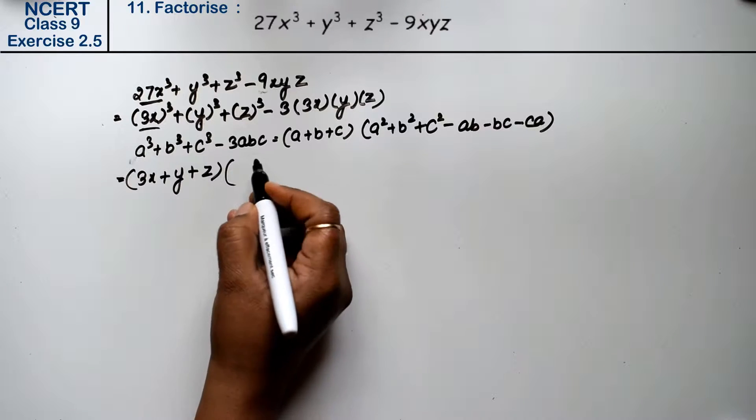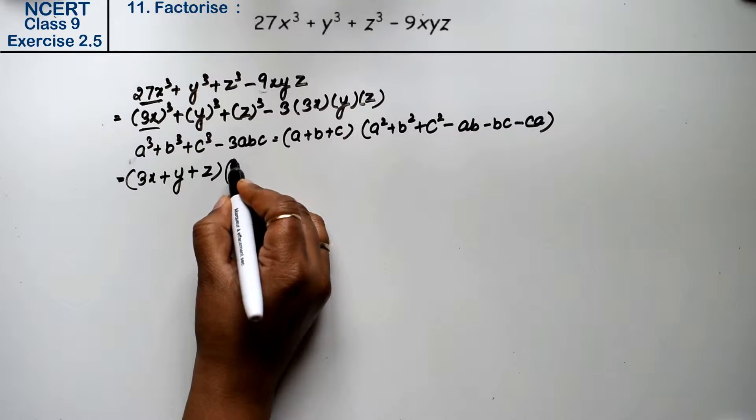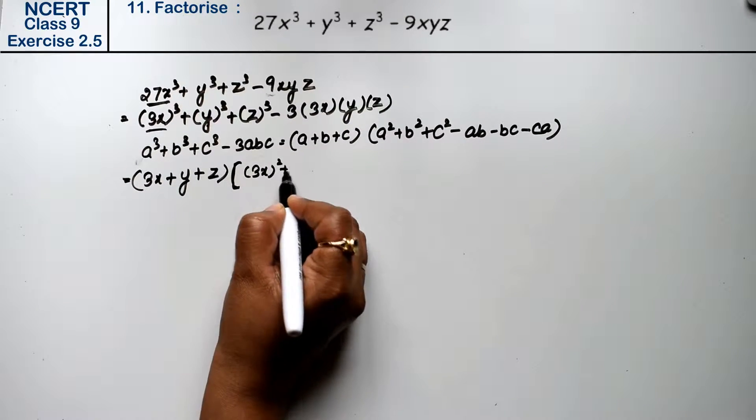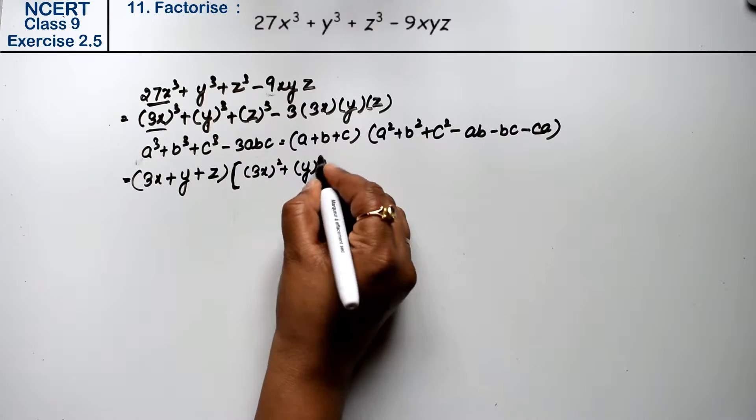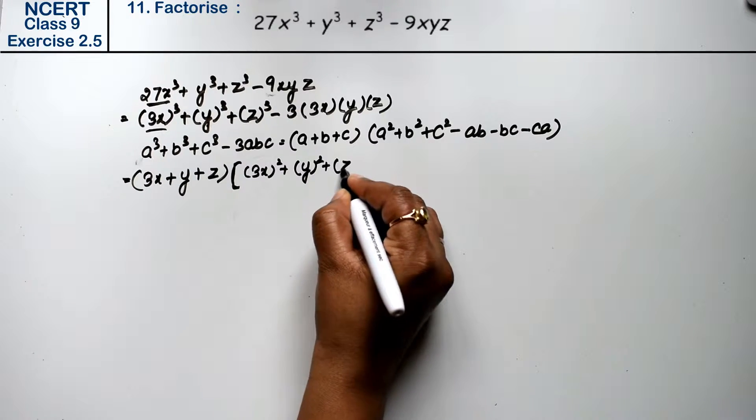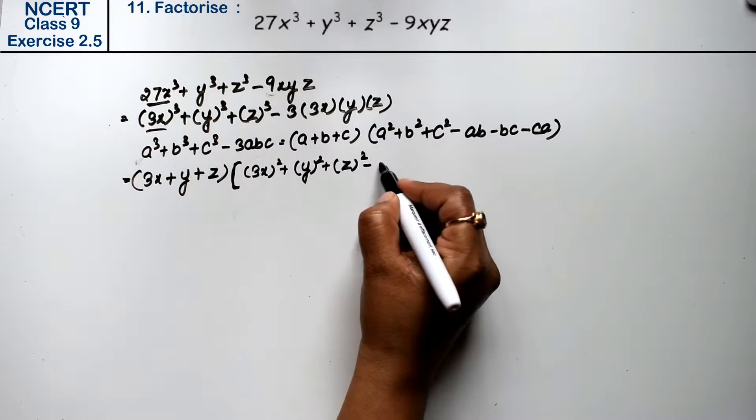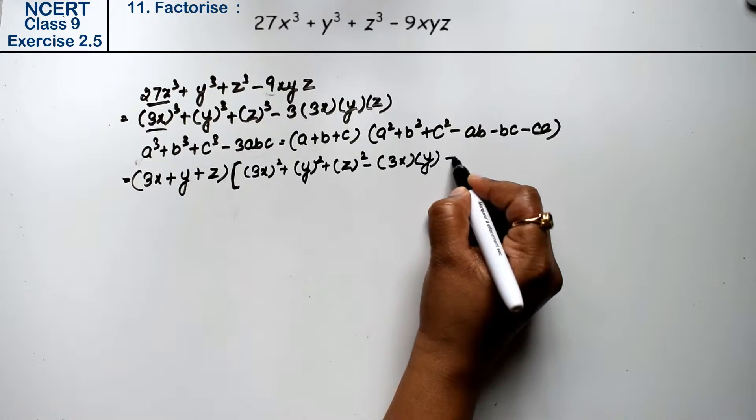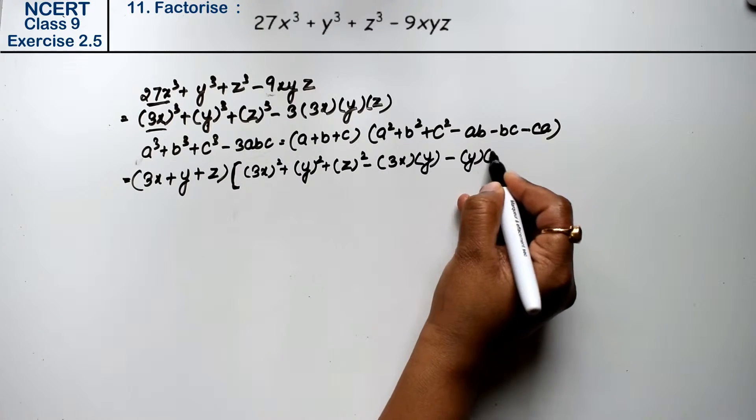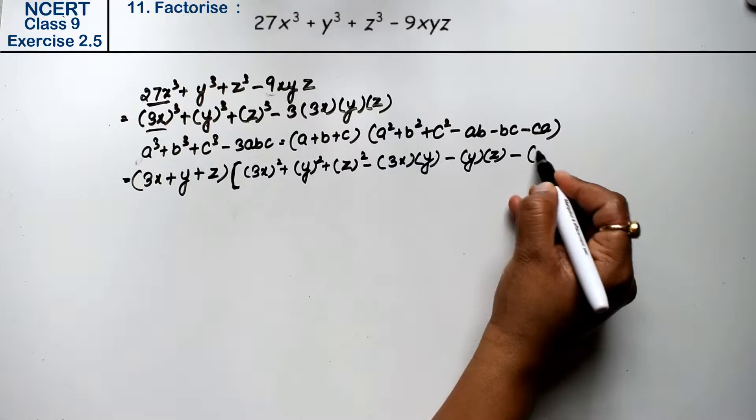And we will write a². So, 3x whole square plus y whole square plus z whole square minus ab, that means 3x into y minus y into z minus z...